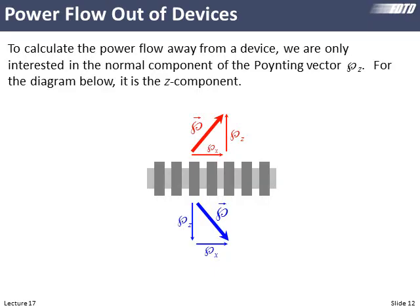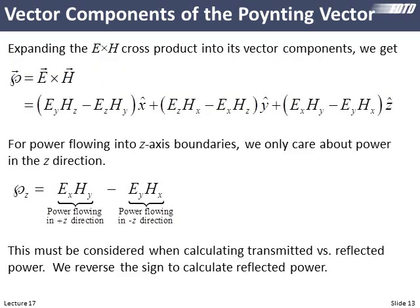The transverse component of the Poynting vector carries power horizontally — it's not power leaving the device. It's only the z-component (vertical component) of the Poynting vector on the reflection and transmission side that contributes to carrying power to or from the device, so for calculating transmission and reflection we listen only to the z-component and ignore the other components.